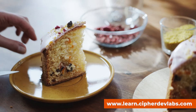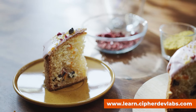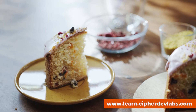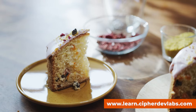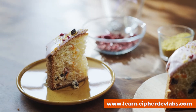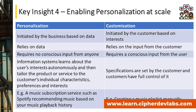Customization requires conscious input from the user, whereas with Personalization, information systems learn about the user's interests autonomously — without any human input — and then tailor the product or service to the customer's individual characteristics, preferences, and interests. With Customization, specifications are set by the customer and they have full control. The best side-by-side example is Spotify: recommending music based on your playback history is Personalization, while manually creating a music playlist is Customization.